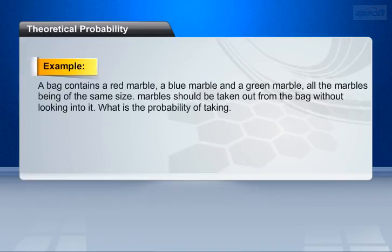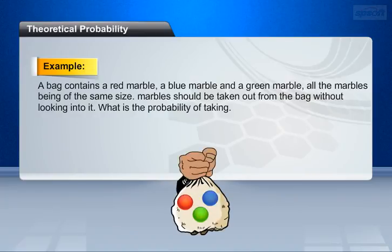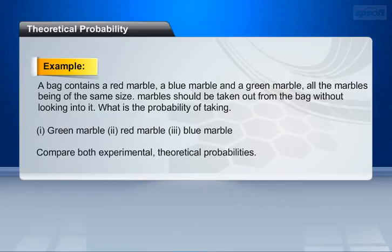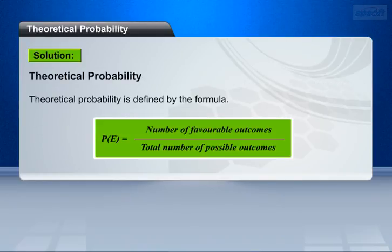Let's see an example using both probabilities. A bag contains a red marble, a blue marble, and a green marble, all of the same size. Marbles should be taken out from the bag without looking into it. What is the probability of taking a green marble, a red marble, and a blue marble? Compare both experimental and theoretical probabilities. Theoretical probability is defined by the formula: P(E) = number of favorable outcomes divided by total number of possible outcomes.